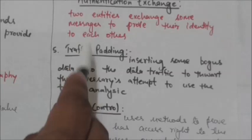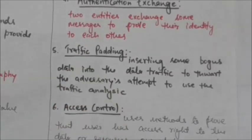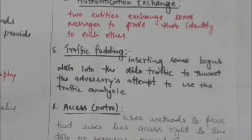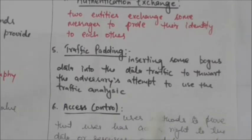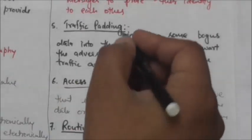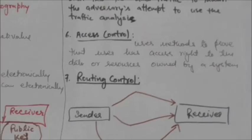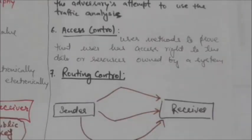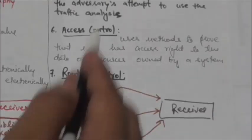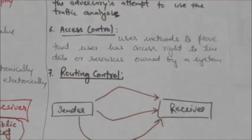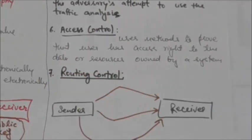Another mechanism is traffic padding. Traffic padding means inserting some bogus data into the data traffic to thwart an adversary's attempt to use traffic analysis. Another mechanism is access control, which uses methods to prove that a user has access rights to the data or resources owned by a system. Examples of proofs are passwords and PINs.